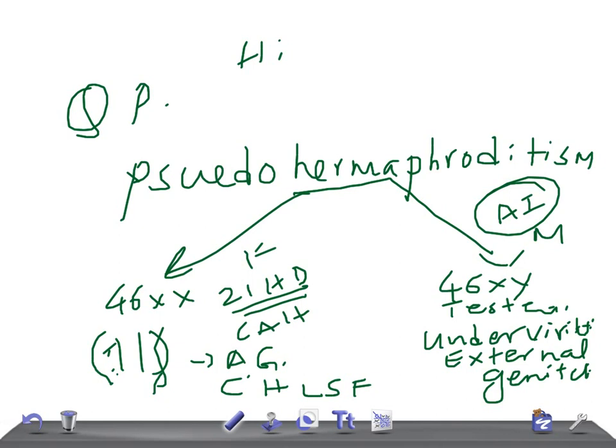Because in USMLE and MRCPCH examination, you have to diagnose the disease based on the clinical symptoms. Either they will give you the disease and ask you about the signs and symptoms, or they will give the signs and symptoms and ask you to diagnose the disease. So what are the four things you see: ambiguous genitalia, virilization of external genitalia, clitoral hypertrophy, and labioscrotal fusion.